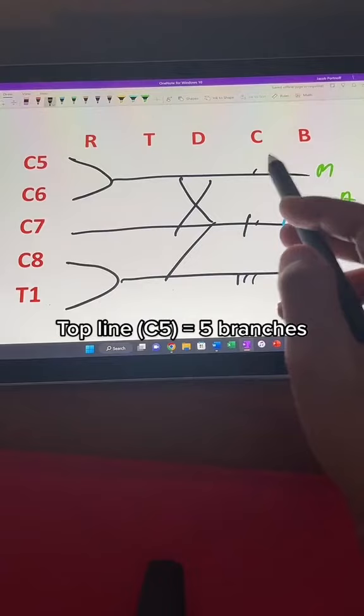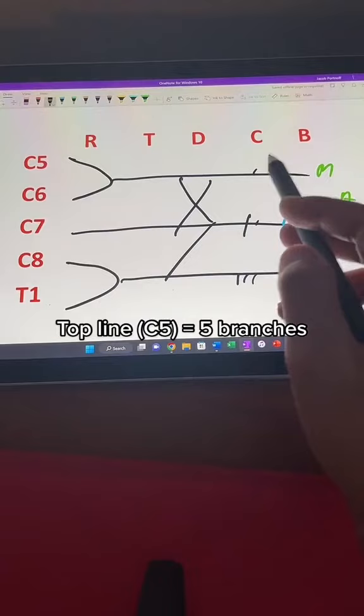So dorsal scapular, supraclavicular, subclavius, and then a long one conveniently called the long thoracic.